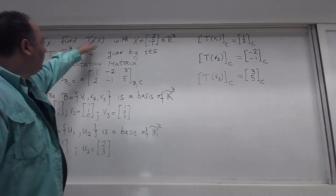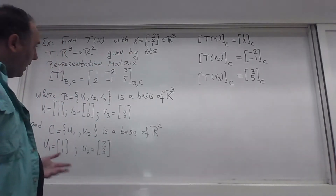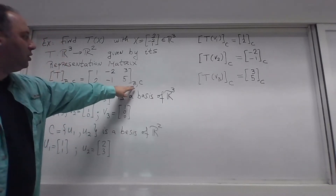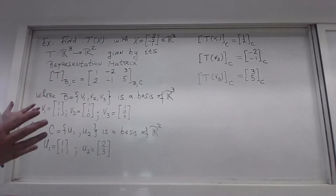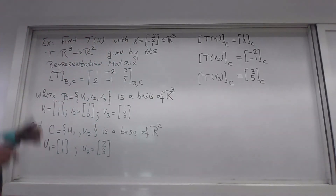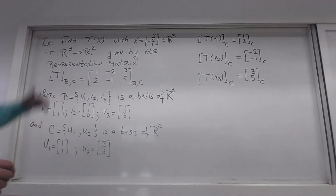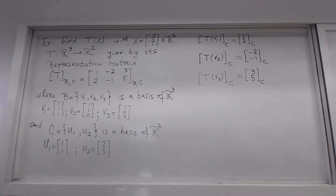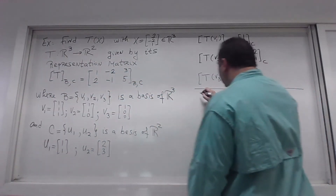My goal is to find T of x. This representation matrix multiplies coordinate vectors in basis B, so my first step will be to find the coordinates of x in basis B. Once I do that, I can perform the matrix-vector product, and what I get are the coordinates of the result in basis C. Then I use the definition of coordinates to find T(x).